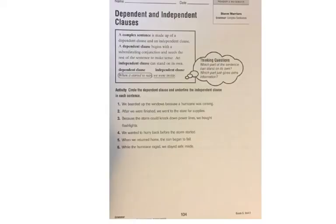Dependent and independent clauses. As we just talked about, we're continuing work with complex sentences, and complex sentences have two parts: a dependent and an independent clause. The dependent clause is dependent on the subordinating conjunction — it's the piece that's not a complete sentence on its own and includes the subordinating conjunction. It needs the rest of the sentence to make sense. The independent clause is the piece that could be a complete sentence on its own. These are just the names for the two pieces of a complex sentence.